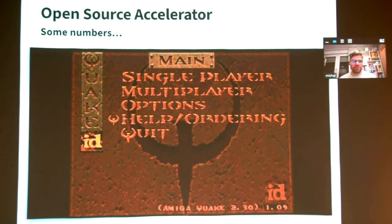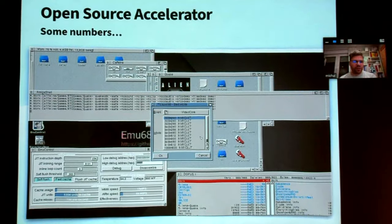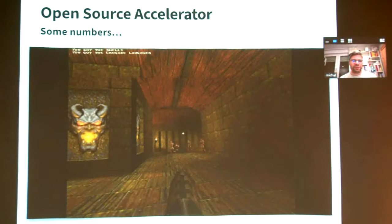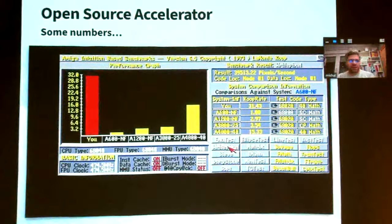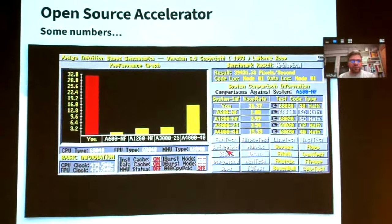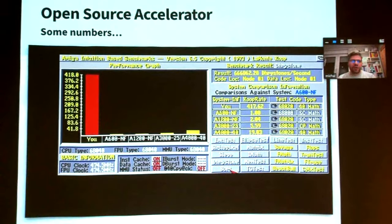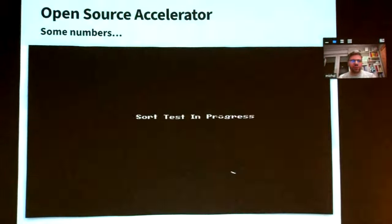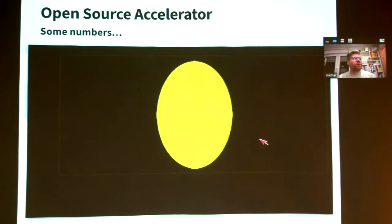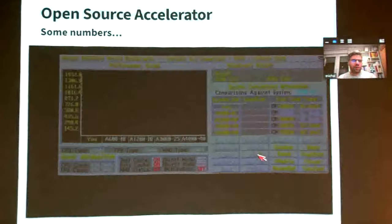At 320x240 resolution, Quake runs at 70 FPS. Getting a bit higher also gives the speed you'd want for a pleasant game. A much better benchmark than SysInfo is AIBB. In AIBB, you can see the chip memory performance is on par with a regular Amiga. On the other hand, everything that uses CPU only is blazing fast. In LipsBlit drawing, chip memory is not the fastest, but CPU computations are very fast.